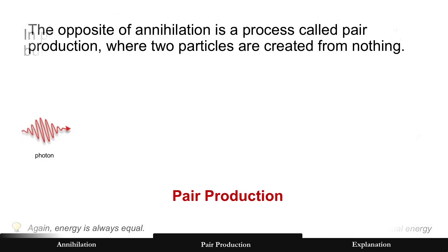Now there's also an opposite of annihilation, a process called pair production. And this one's really strange because a photon can create two particles out of nothing. The electron and its antiparticle, called the positron, appear. But again, energy is always equal.